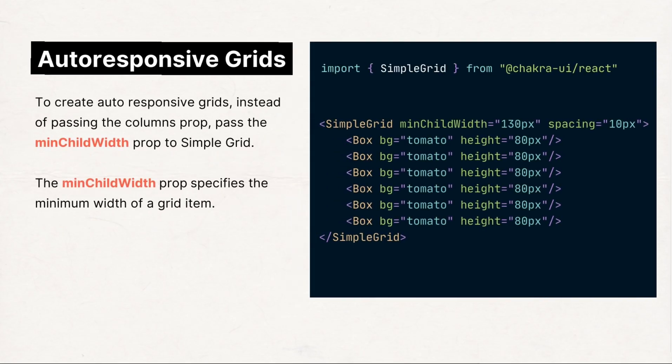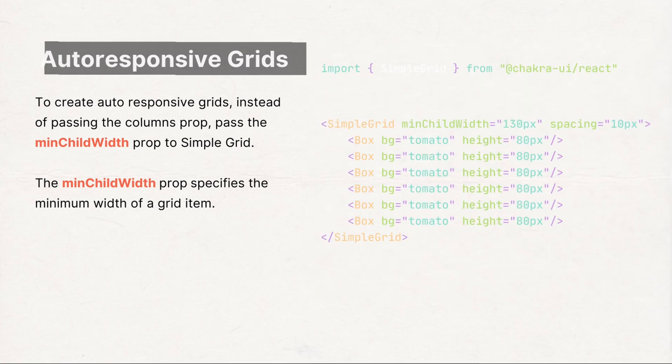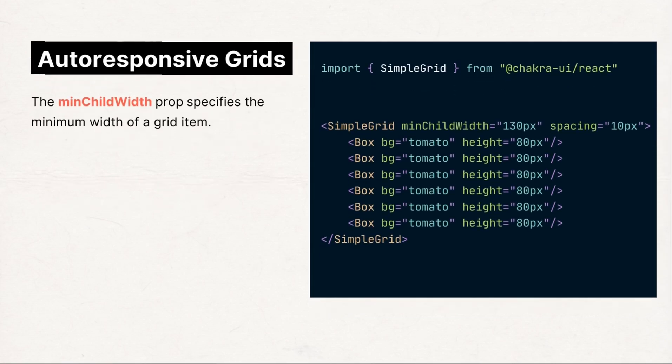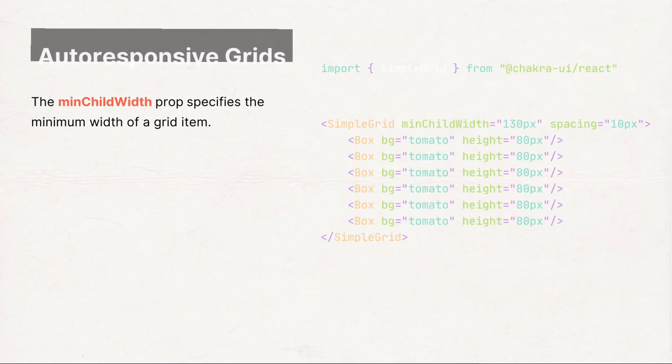Another great feature of Simple Grid is the ease of making grid items auto-responsive. All you need to do is replace the columns prop with the minChildWidth prop, which specifies the minimum width of a grid item.